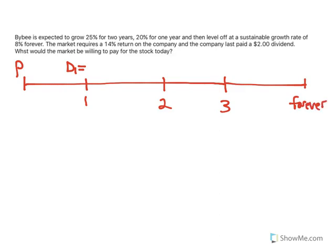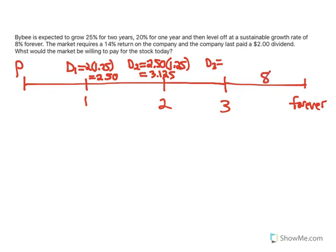At time 1, the $2 dividend increases at 25%, so D1 will be $2.50. Then for D2, that $2.50 increases another 25%, giving a dividend of $3.125. Then for D3 — the final dividend before the steady 8% growth — from year 2 to year 3 it increases at 20%: 3.125 times 1.2 equals $3.75.